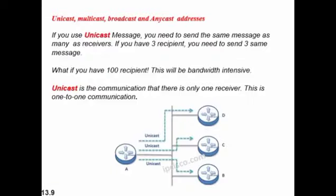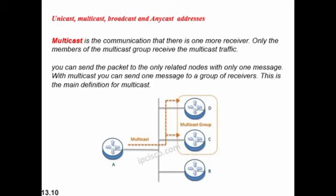There are different types of addresses: unicast, multicast, broadcast, and anycast. Unicast is one-to-one communication — one sender, one receiver. Multicast means one message sent to multiple receivers — one sender, but receivers can be more than one. Broadcast means sending to everyone — one sender and many receivers, anyone can receive the message.